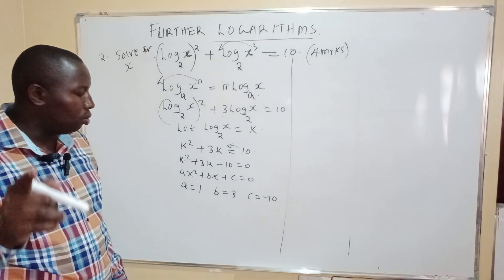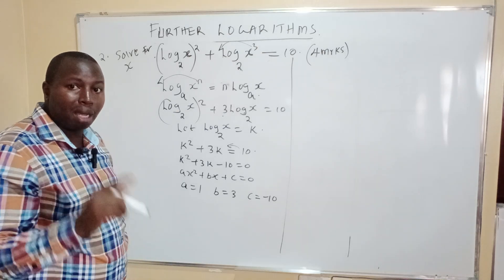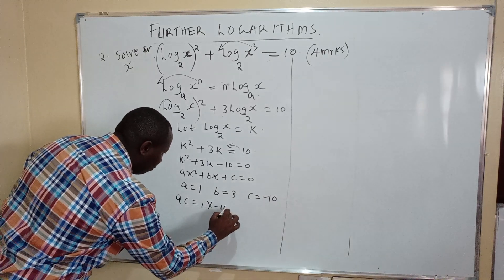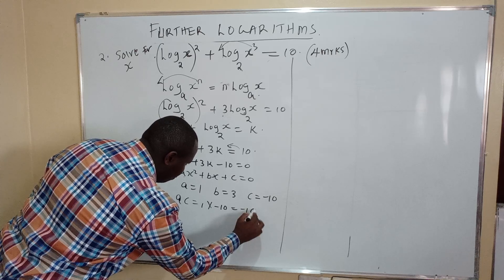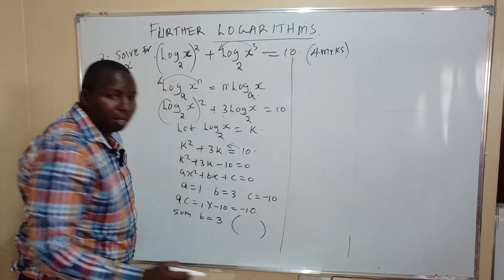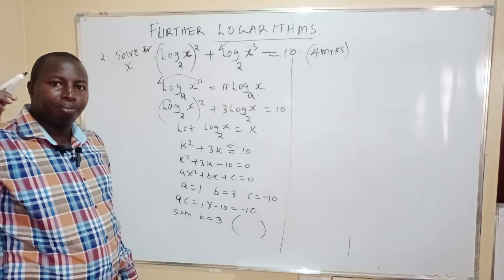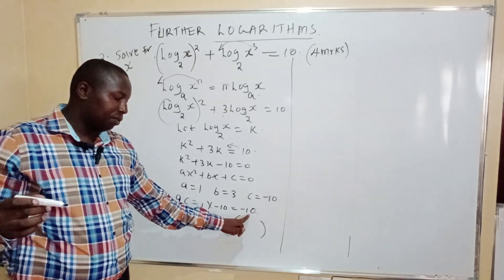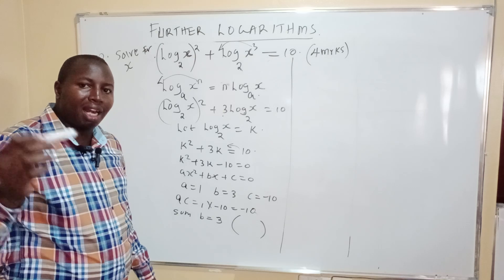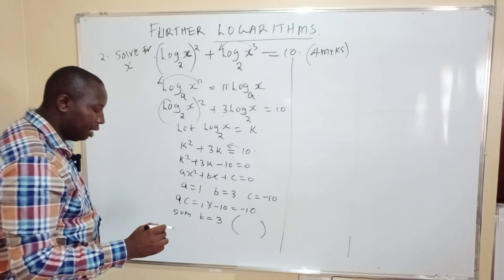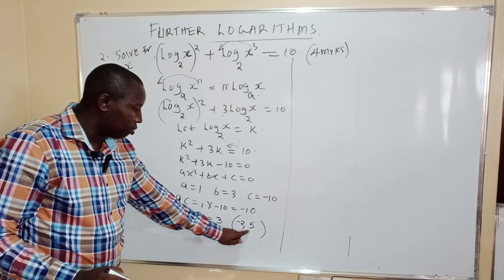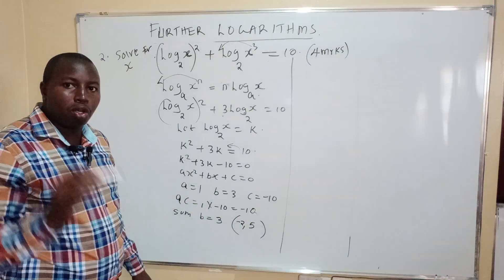Using the sum and product method: the product of a and c is 1 times negative 10, which is negative 10, and the sum equals b, which is 3. We need two numbers that multiply to negative 10 and add to 3. Those numbers are negative 2 and 5, since negative 2 times 5 is negative 10 and negative 2 plus 5 is 3.